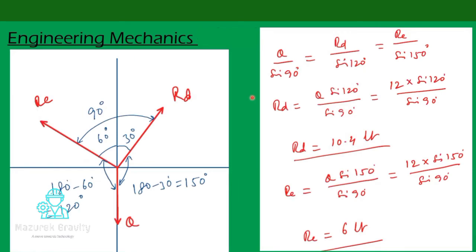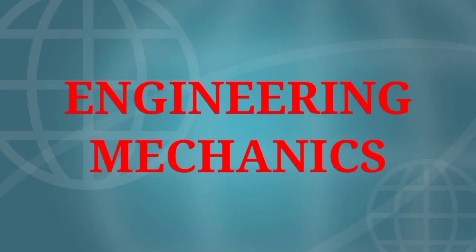Now let us apply Lamy's theorem: Q / sin 90° = Rd / sin 120° = Re / sin 150°. From the first and second terms, Rd = Q × sin 120° / sin 90°. After substituting values, Rd = 10.4 lb. From the first and last terms, Re = Q × sin 150° / sin 90°, giving Re = 6 lb.